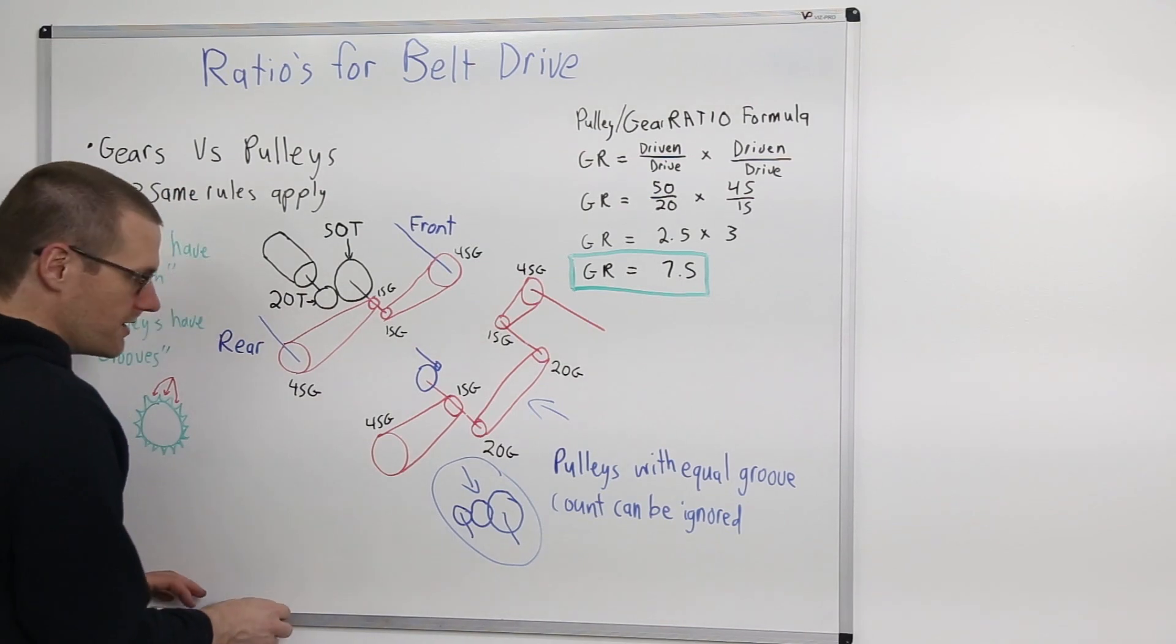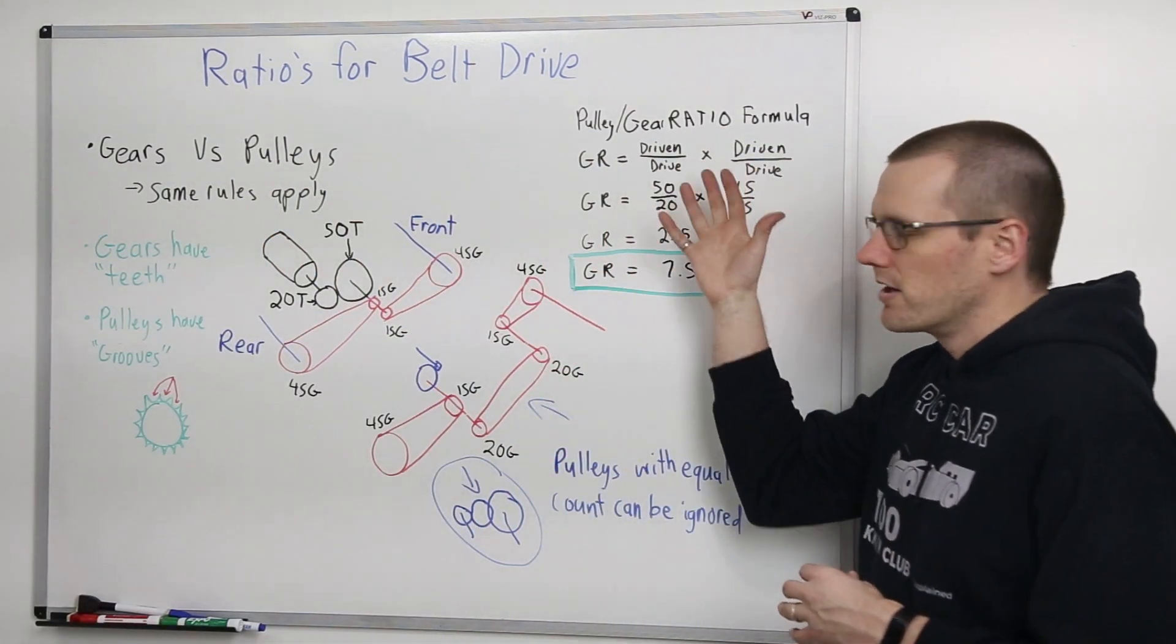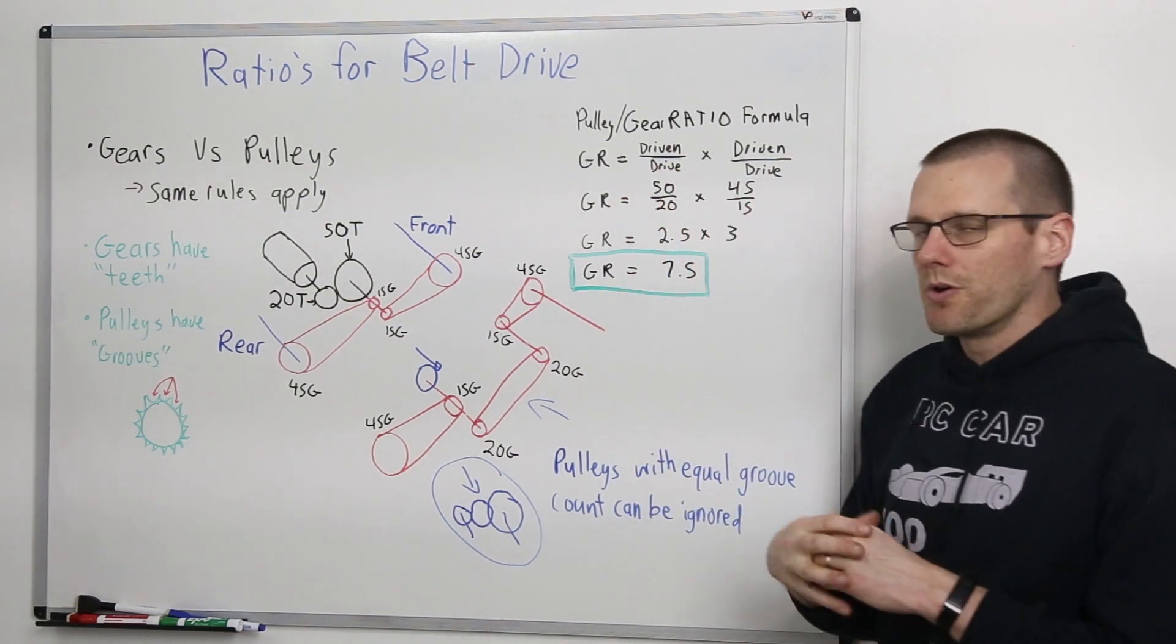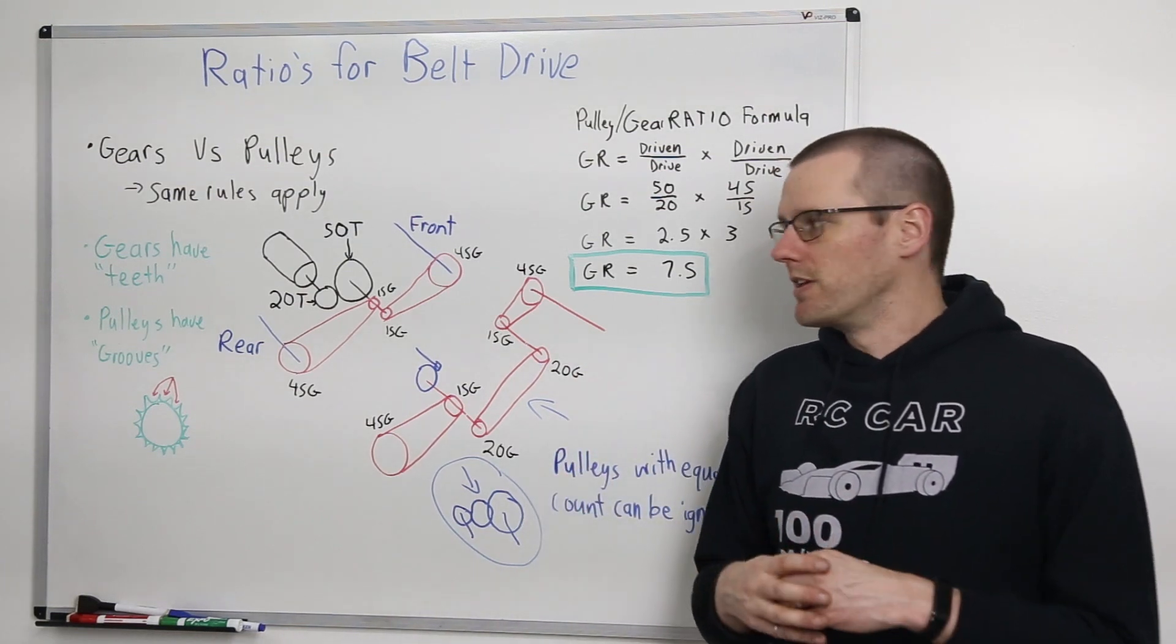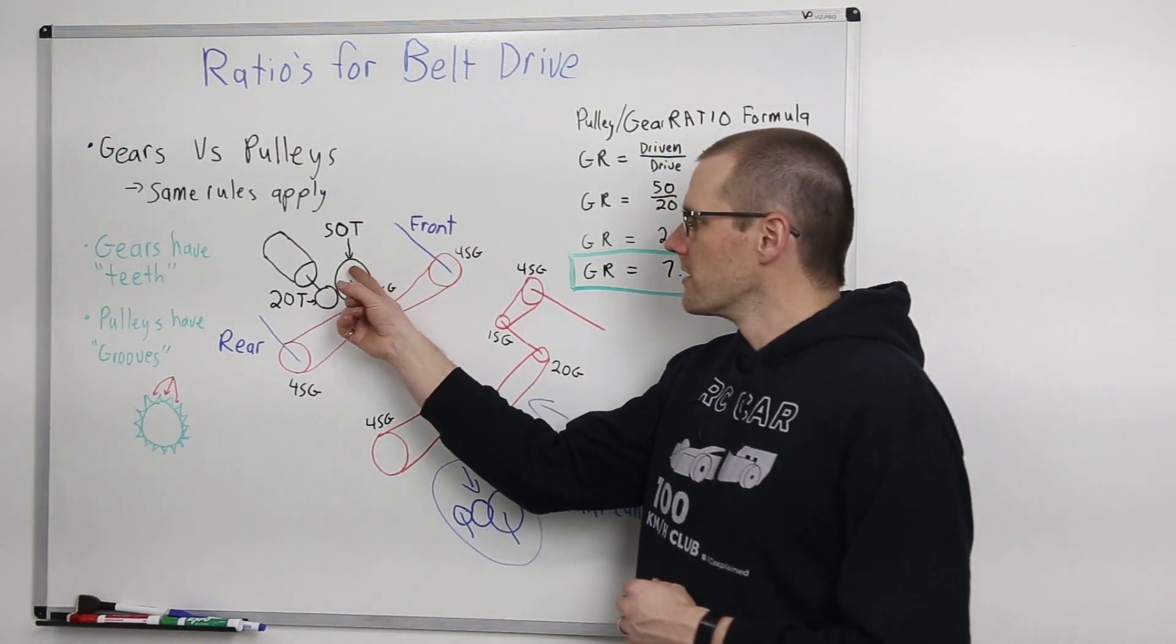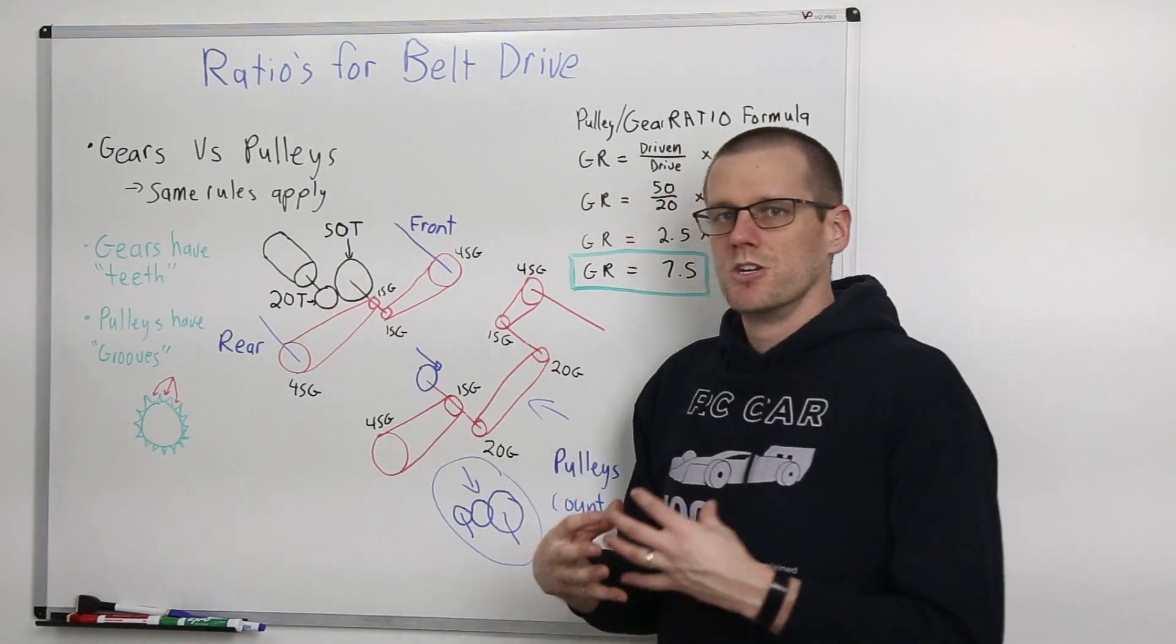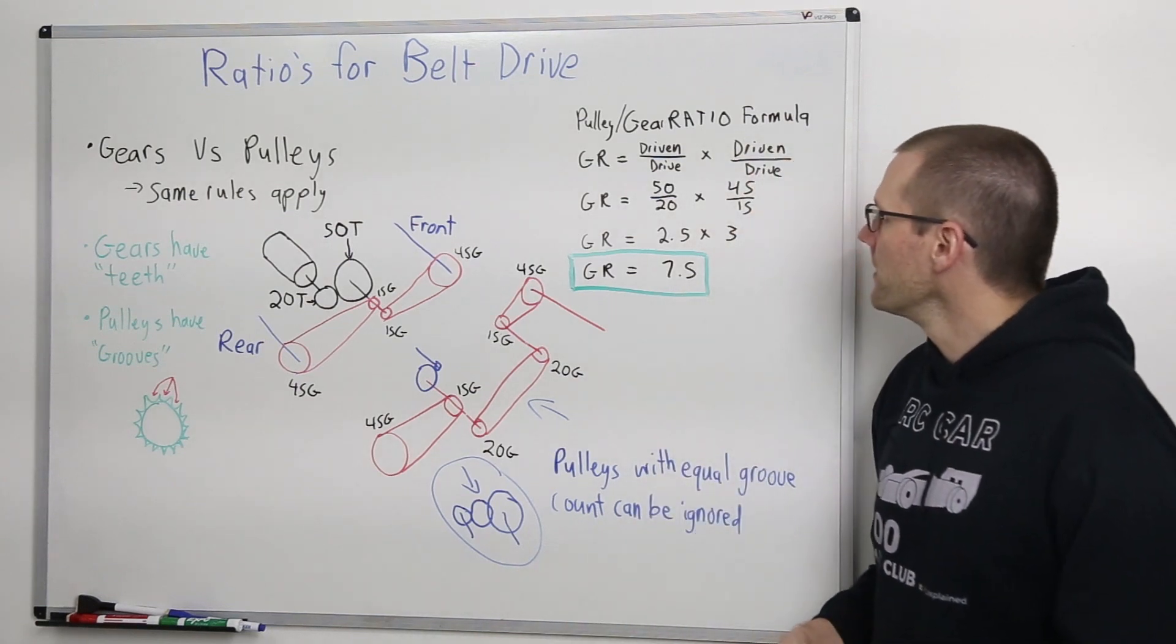So now the next thing that we need to go through is the actual calculation that we have here on the top right hand side of our board. So the gear ratio is known as your driven gear divided by your drive gear, where your driven gear is always the gear that is going to be driven by the motor driving that drive gear. So everything there should be self-explanatory.